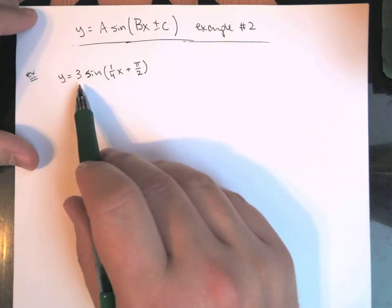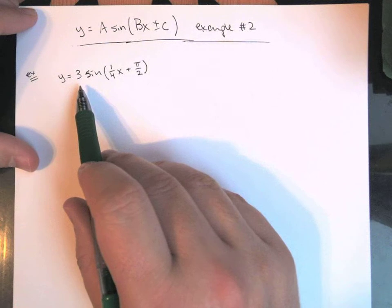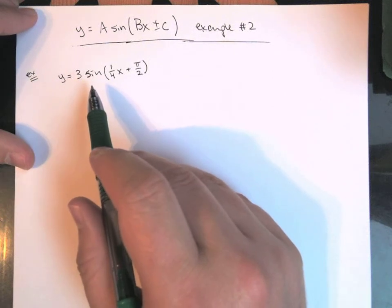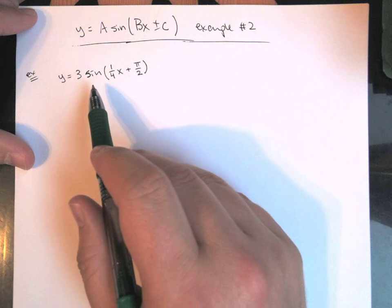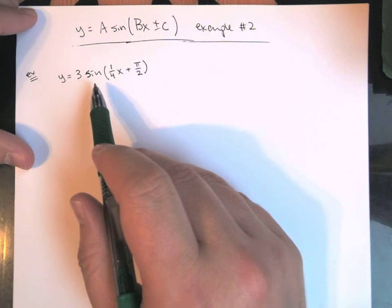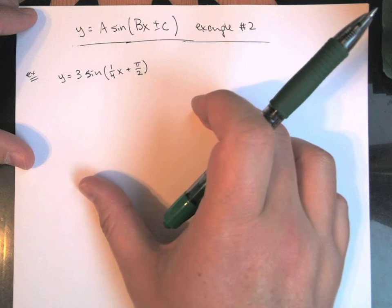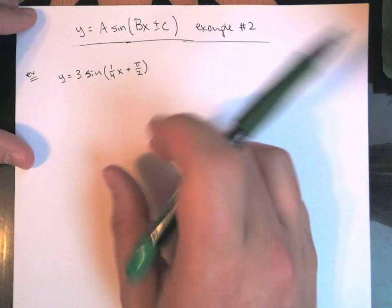I also put in an A value here, so I've got 3 in front. It's going to affect our amplitude, right? It'll affect our maximums and minimums, but it's not really going to affect anything as far as the stuff on the inside, which is either compressing or expanding the cycle and then shifting us, in this case, to the left.